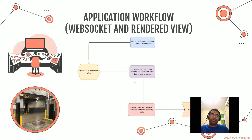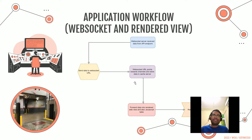For the WebSocket and rendered view so that the customer can have a visual representation of the data: a WebSocket server written in Python receives data from the API endpoint, sends it to a WebSocket URL which is handled by Django Channels, stores the data in a Redis cache server, forwards it to the rendered web view and a JavaScript table, and finally renders a table showing the tag counts as well.